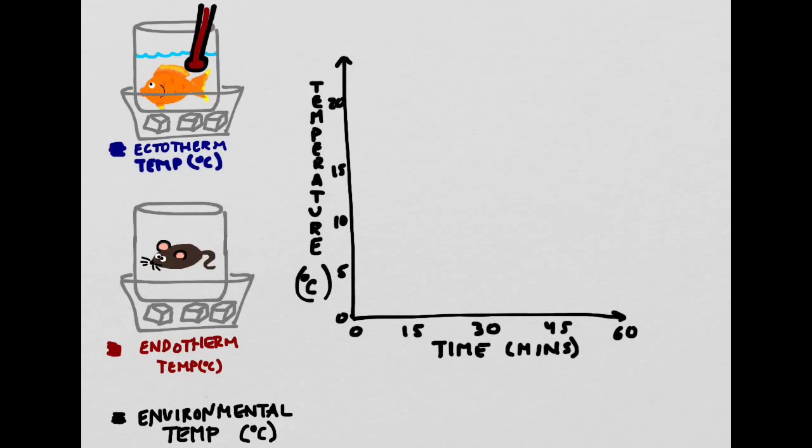To measure the temperature of the goldfish's body, we put a thermometer into its water. But because the mouse doesn't have water around it, we're going to imagine that we could put a thermometer into the mouse's mouth. The temperature started off at about 20 degrees Celsius, or roughly 75 degrees Fahrenheit, at room temperature.